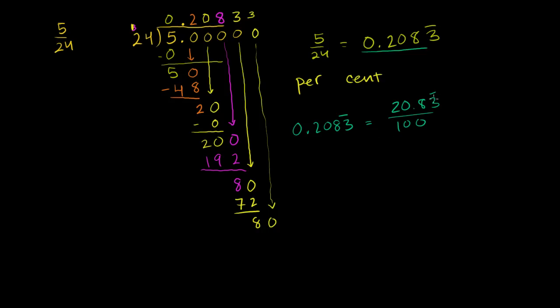Or you could say that this is equal to 20.83 repeating percent. A very quick way to think about how to go from decimals to percent is you can multiply by 100 and then put the percentage sign. Or if you go backwards, you divide by 100 and get rid of the percentage sign. That was a good warm up.